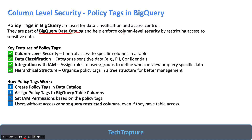Two important things to remember: BigQuery policy tags are part of Data Catalog and they are used for column-level security. Using a policy tag we can control access to specific columns — for example, sensitive PII data like SSN or PAN card numbers. We can make these visible only to specific users and hidden from others. Options include hiding the column, masking it, masking first few characters, or displaying a hashed value instead of the actual value.